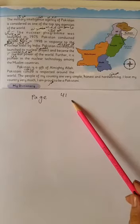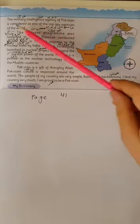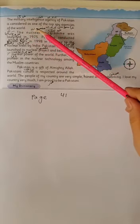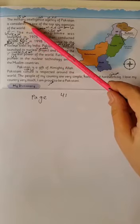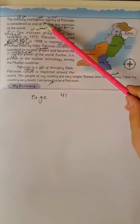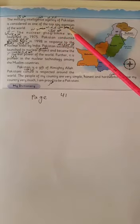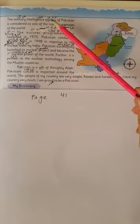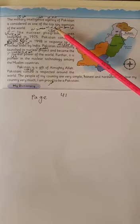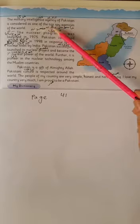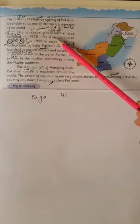Come to page 41. The military intelligence agency of Pakistan is considered as one of the top spy agencies of the world. Military: fauji. Intelligence Agency: khufiya idare. Spy agencies: jasusi idare. Pakistan ke khufiya fauji idaroon ka shumar duniya ke aham tareen jasusi idaroon mein hota hai.